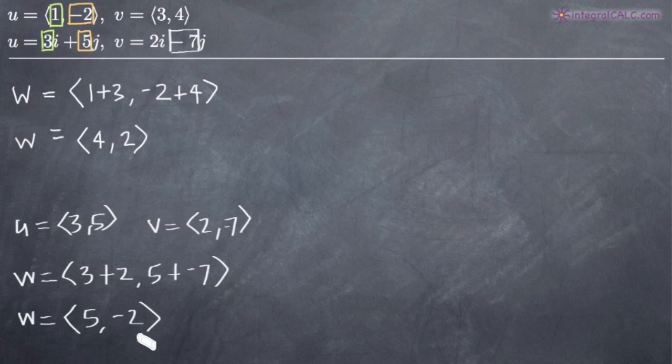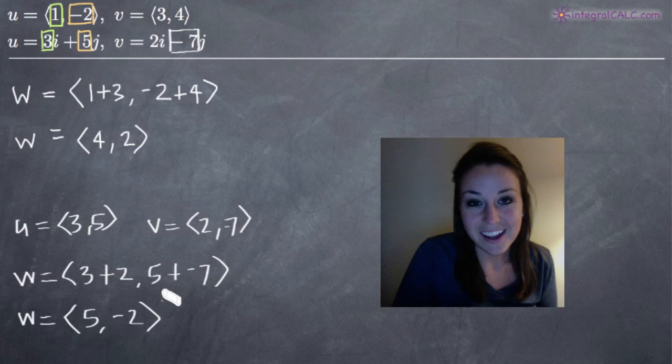So our new vector is w, which is going to be 5, negative 2. So that's it! I hope this video helped you guys, and I will see you in the next one!